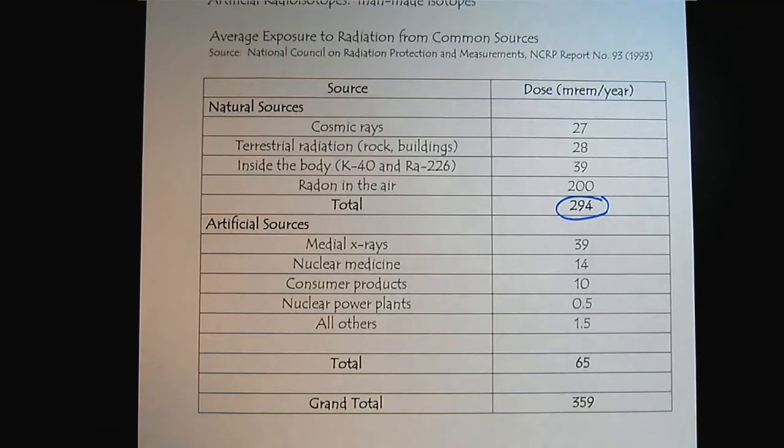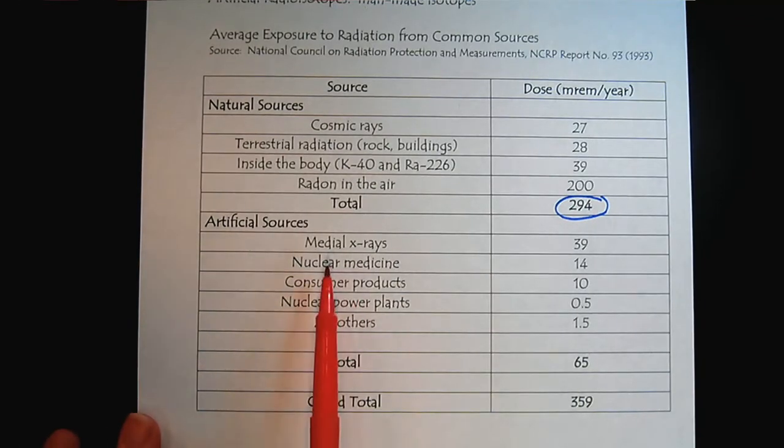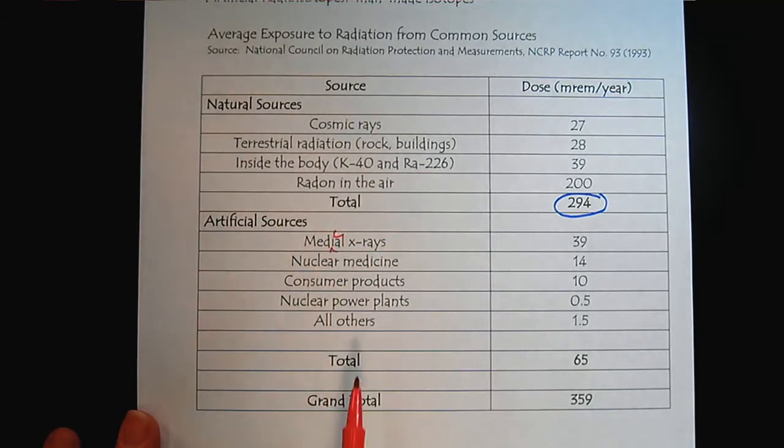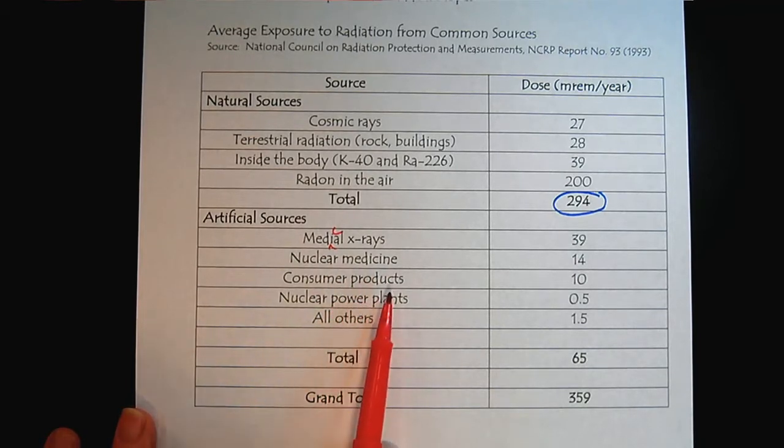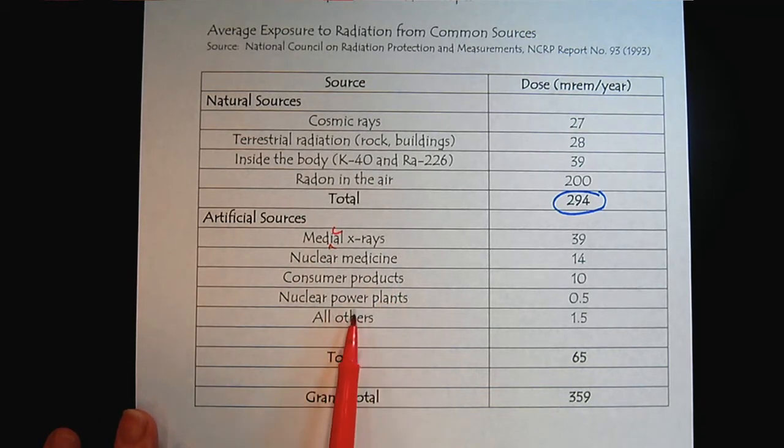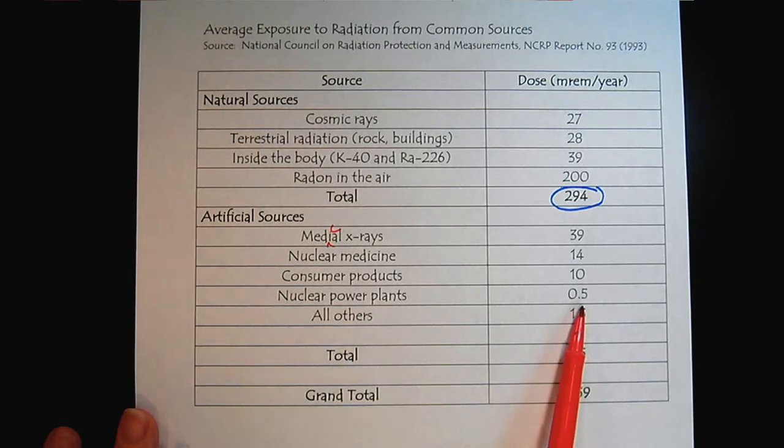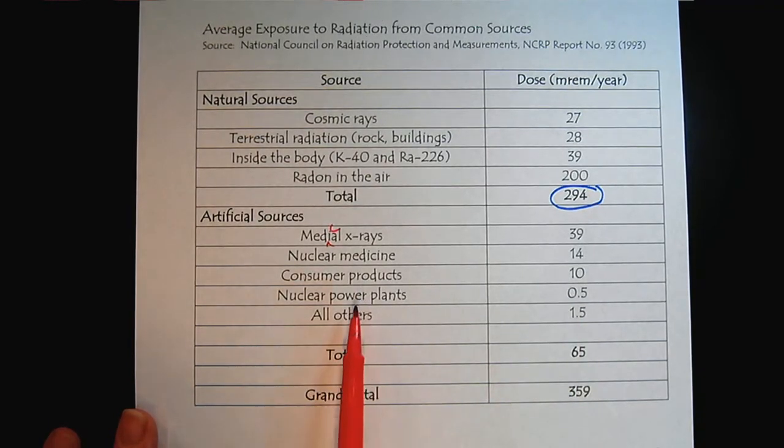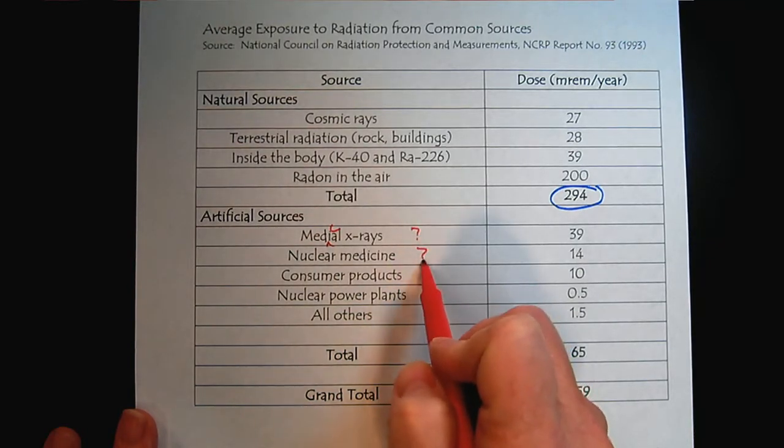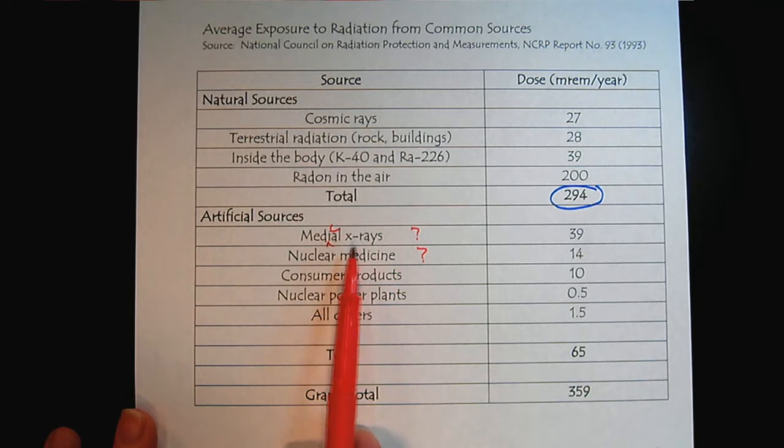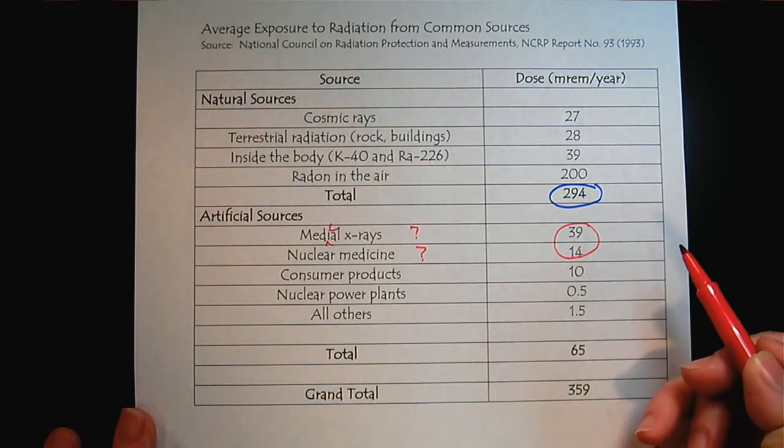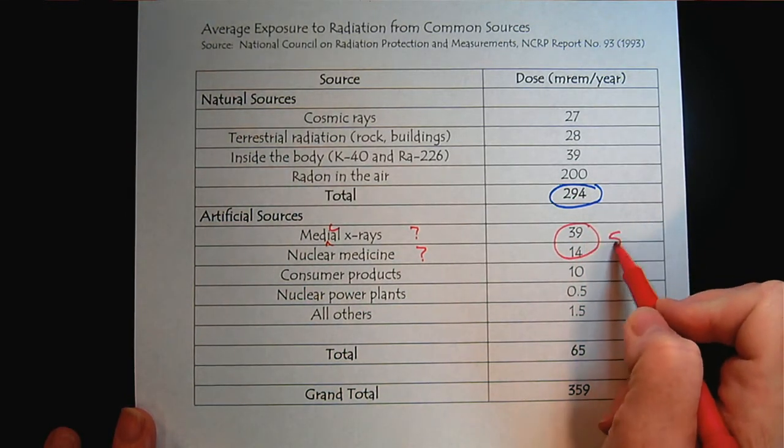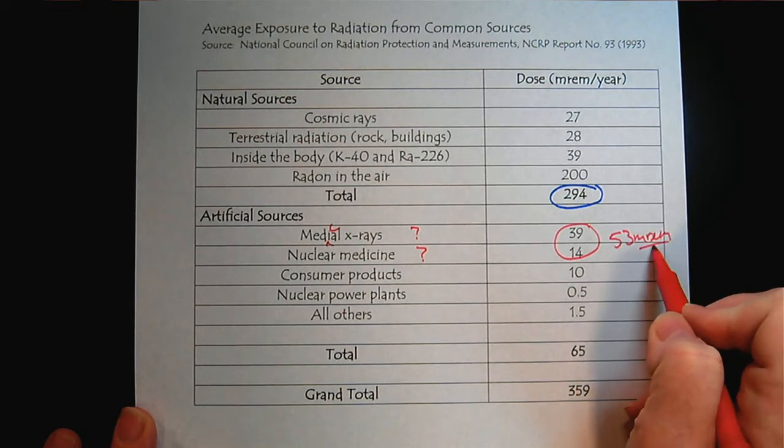Now, where do the artificial sources come from? Well, if we have a medical x-ray or we're receiving a nuclear medicine treatment, some consumer products, television monitors and screens, smoke detectors. If we're close to a nuclear power plant, notice the contribution there, and then all other sources. So now these two, it depends on what's going on in our life. We may or may not be getting x-rays or receiving nuclear medicine treatments. Look at the dose there. That is huge. So that's 53 millirem per year right there.